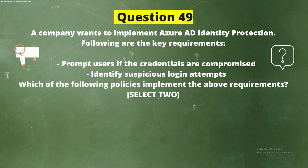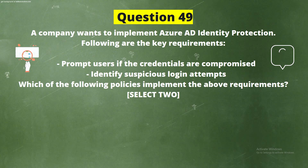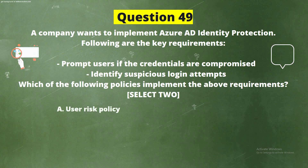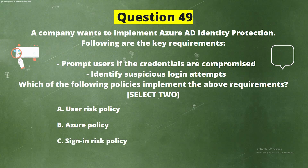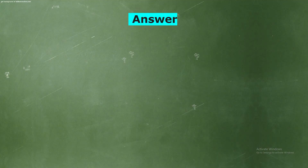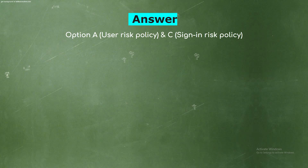Question 49: A company wants to implement Azure AD Identity Protection with the following key requirements — prompt users if credentials are compromised, and identify suspicious login attempts. Which of the following policies implement the above requirements? Select two options. The correct answers are Option A, User Risk Policy, and Option C, Sign-in Risk Policy.